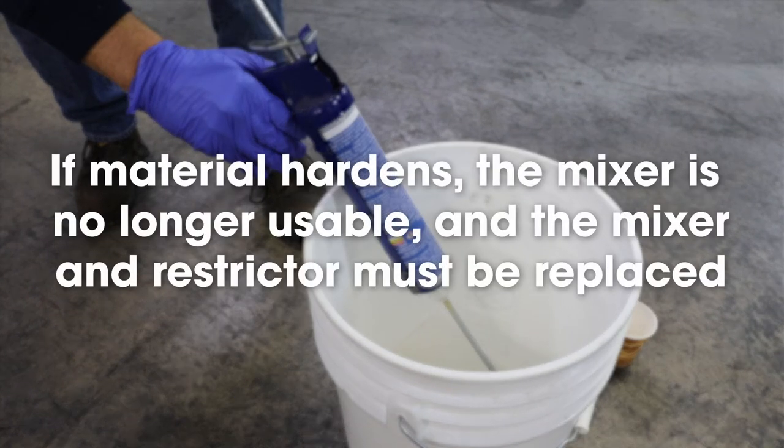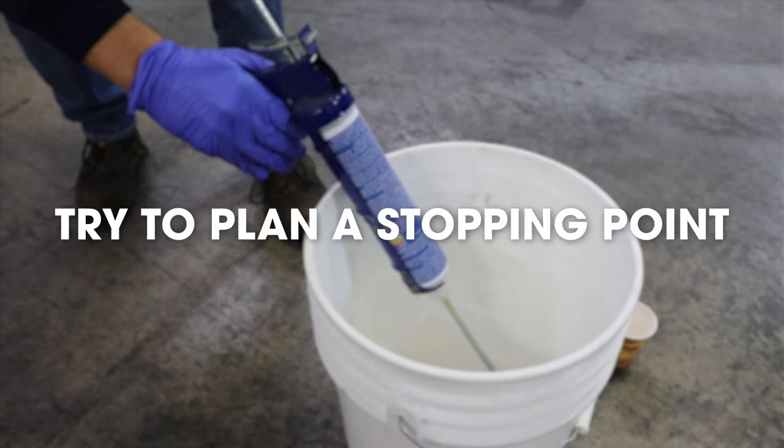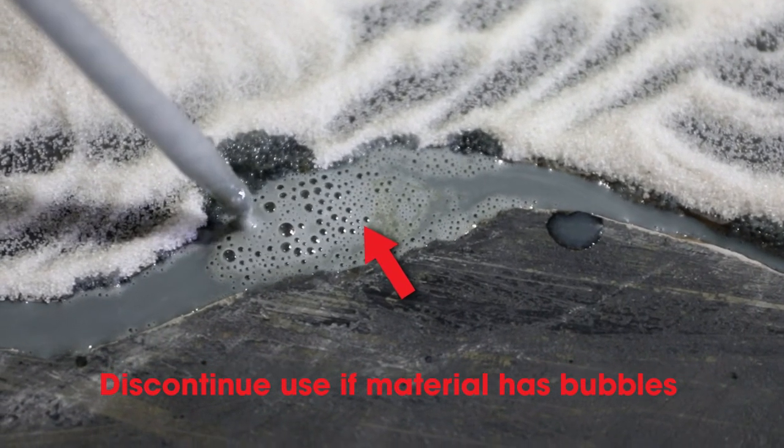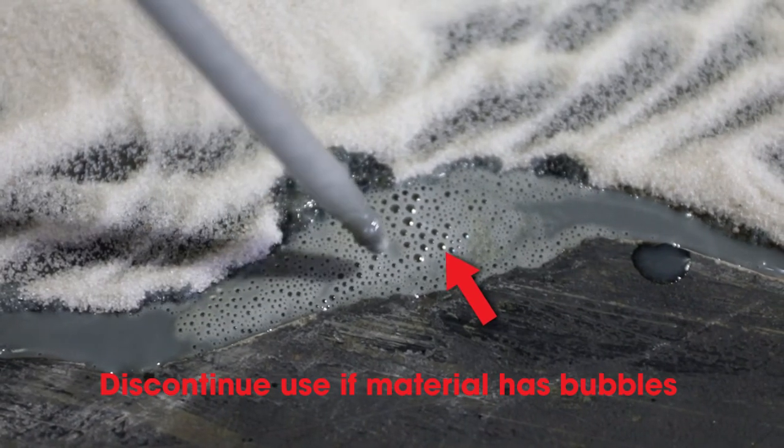If the material hardens, the mixer is no longer usable and the mixer and restrictor must be replaced. Try to plan a stopping point for the end of the tube. When nearing the end of the tube, bubbles may indicate the lag of material. Discontinue use of remaining product.